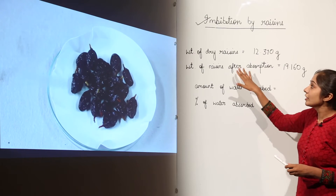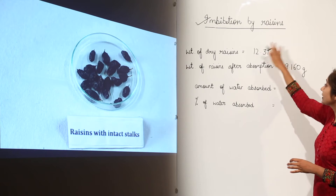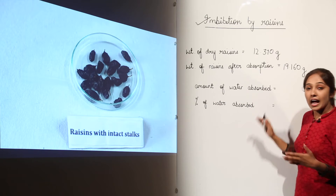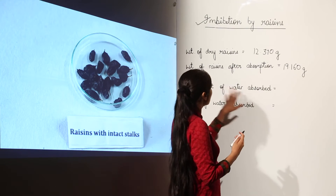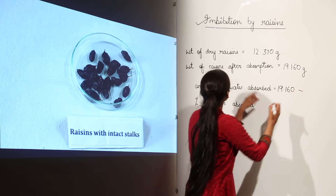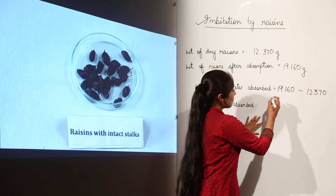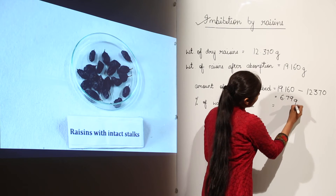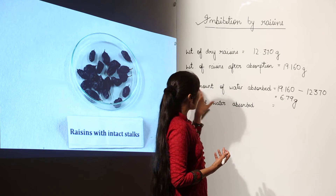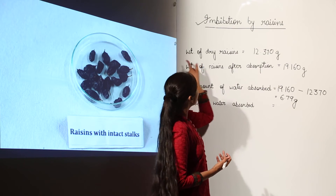We now have the weight of dry raisins and the weight of raisins after absorption. To find the amount of water absorbed, use the formula: weight of raisins after absorption minus weight of dry raisins — that is 19.160 minus 12.370 — which comes out to be 6.79 grams. This is the amount of water absorbed by the raisins.